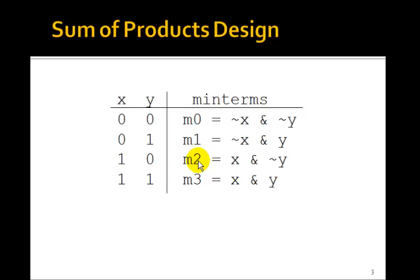How do we make m2 equal 1 if x is 1 and y is 0? Well, x is already 1, so we just leave it. y is 0, so we need to NOT it. So x and NOT y would be 1 if x is 1 and y is 0. Of course, if they're both 1 coming in, then we can just say x and y because 1 and 1 will be 1.